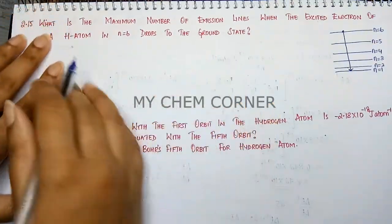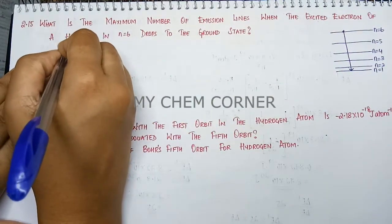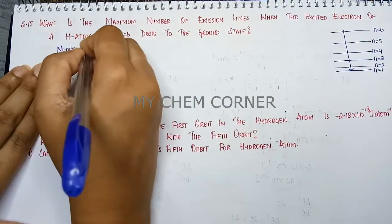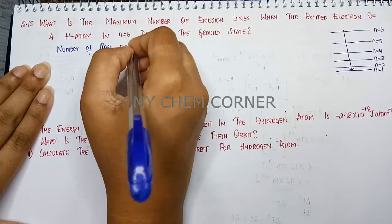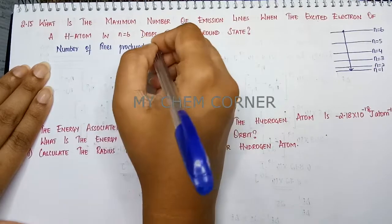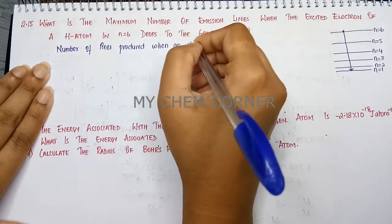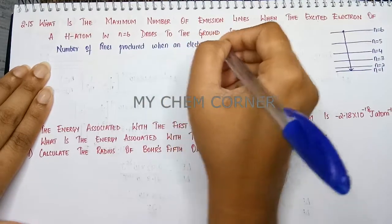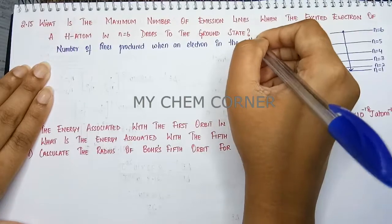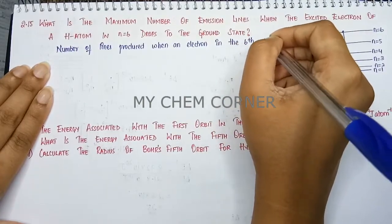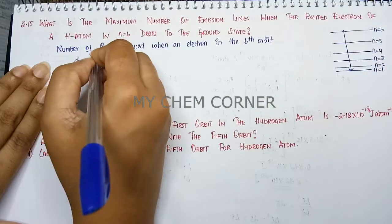So for this we need to see that: number of lines produced when an electron in the sixth orbit drops to the ground state.